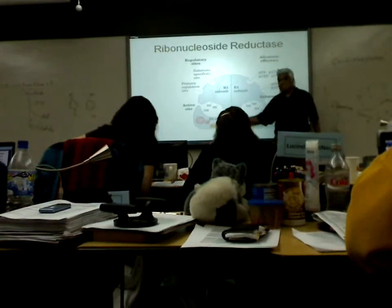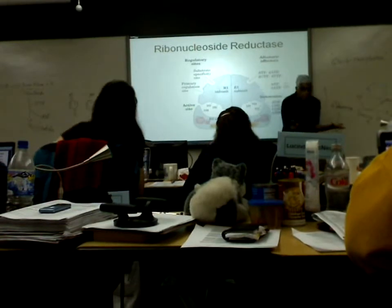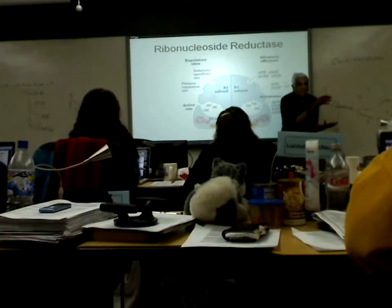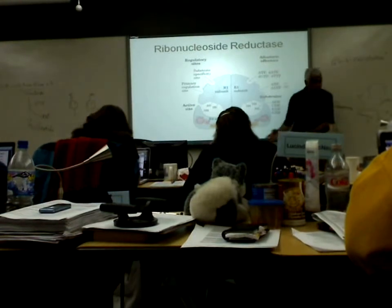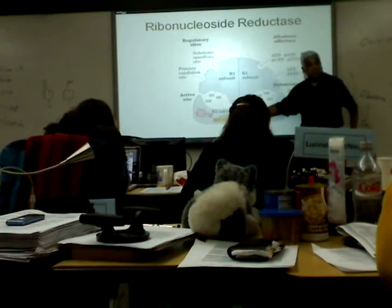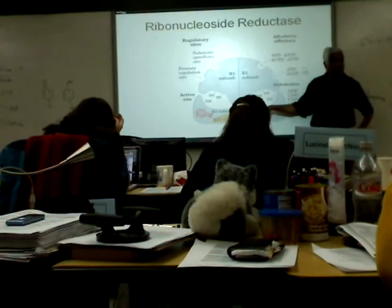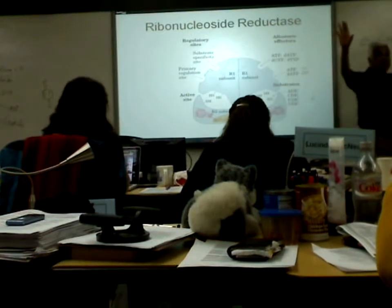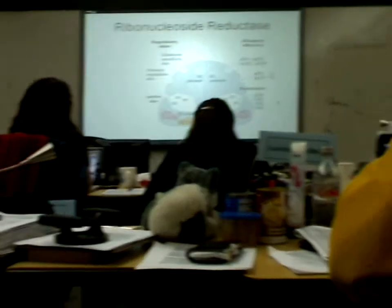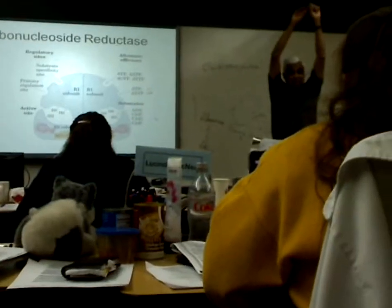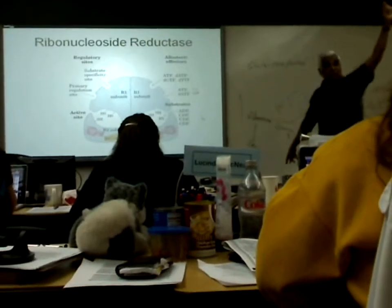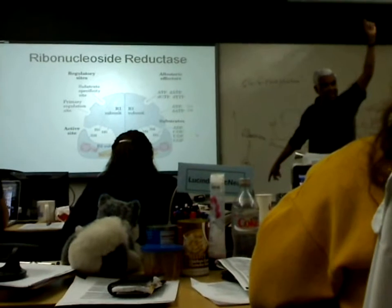Therefore, the subunit is not just sitting there like a platform for the device to play around up there. It seems very involved in the reaction. Therefore, if you go there and interfere with this, the reaction will stop — because electrons are flowing from BRC all the way to NADH.